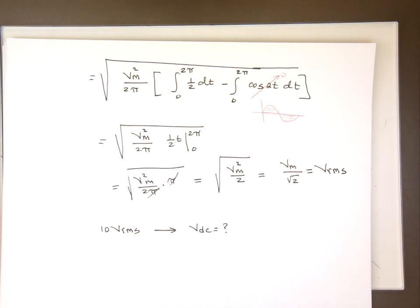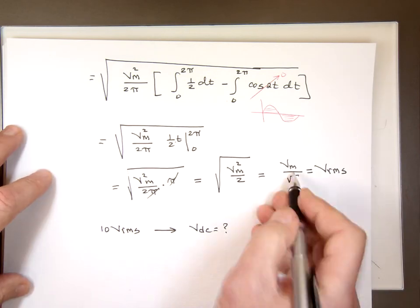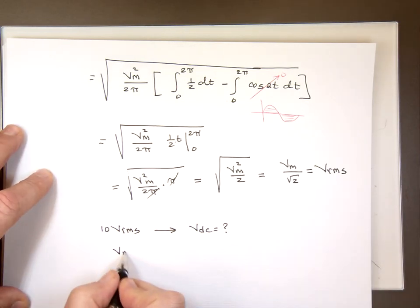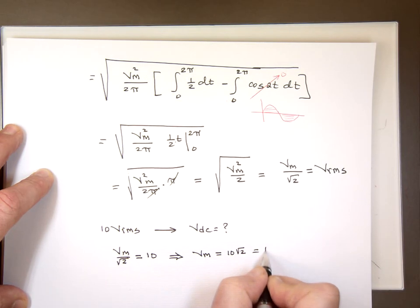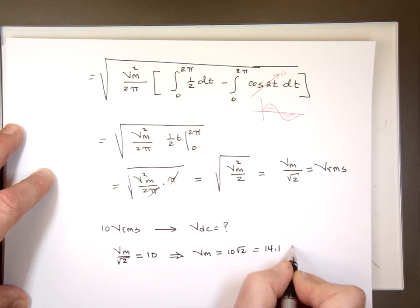Well, the first step is to convert that from RMS to a peak value or a maximum value using that equation. V max over the square root of 2 equals the V RMS, which is 10. So if you multiply, that means V max equals 10 times the square root of 2, which is roughly 14.1 volt peak.